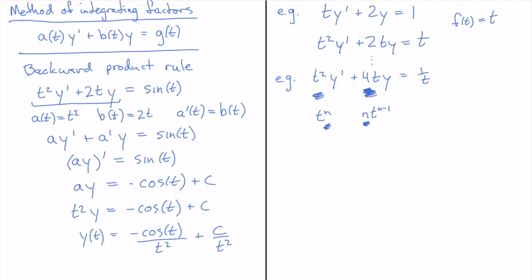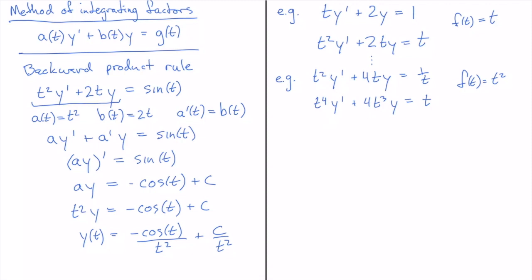I'm stuck with this 4, but I can change the power since the power in these two terms is always going to differ by 1. If the target coefficient I want is 4, that means I have to multiply through by t². So with f(t) = t², I get t⁴·y' + 4t³·y = t. You can see that the derivative of t⁴ is sitting right in front of the y term, so I can apply the backward product rule and continue solving.